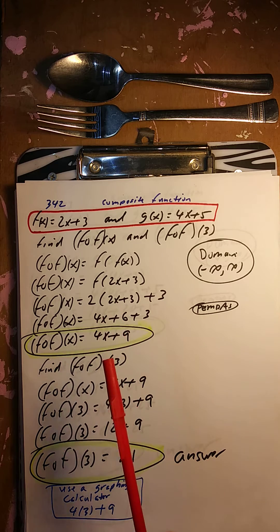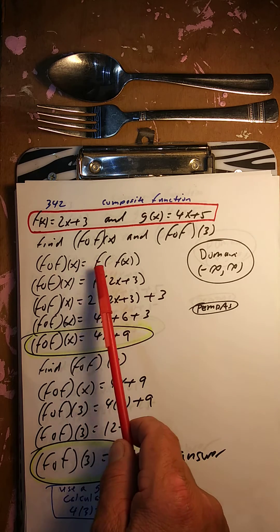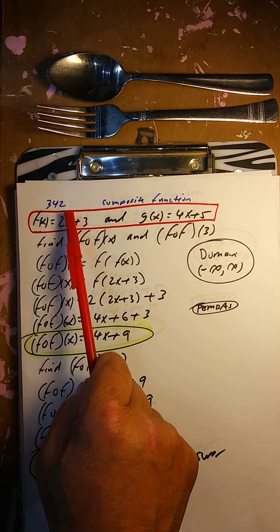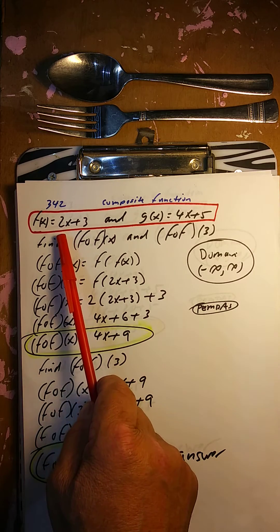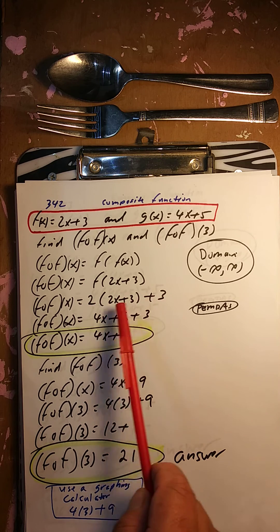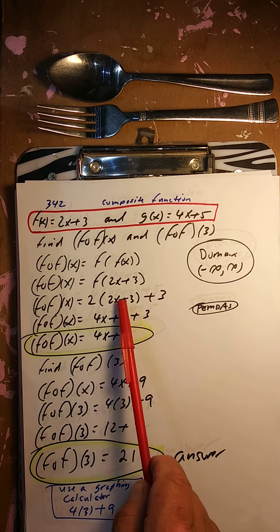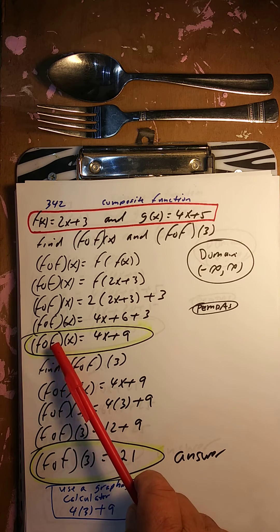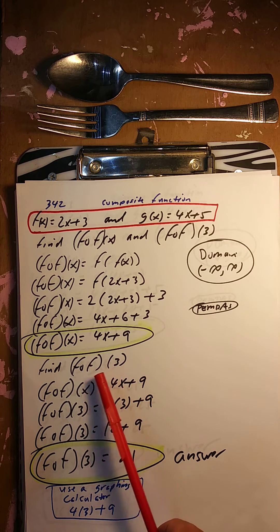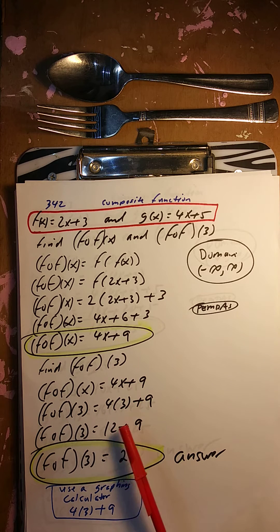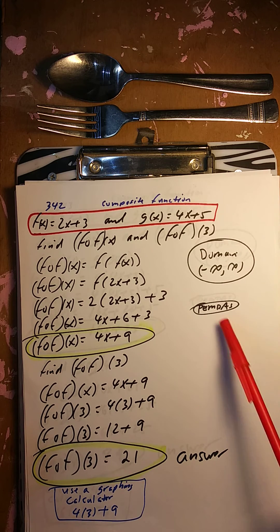Composite function again: f circle f of x, meaning f of f of x. Take f of x, which is 2x plus 3, and put it back inside the same function. So 2 times the quantity 2x plus 3, plus 3. That gives 4x plus 6 plus 3, so 4x plus 9. So f circle f of x is 4x plus 9. To find f circle f of 3: 4 times 3 is 12, plus 9 is 21. Domain is all real numbers.